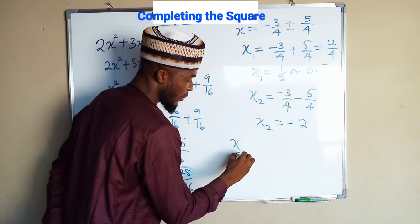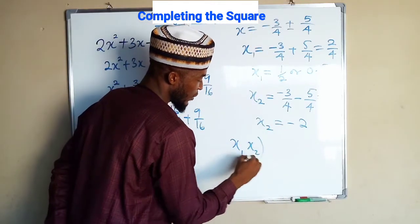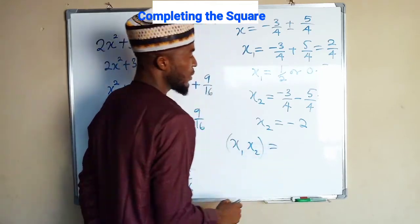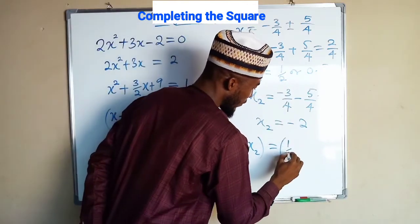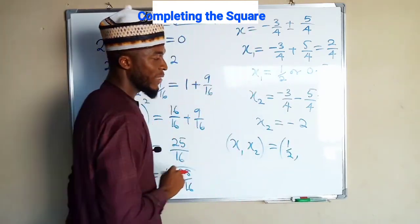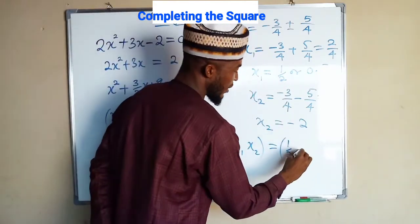Hence the two solutions we have, x1 and x2 are equal to: the first one is either half or 0.5, so we have one-half, and the second one is negative 2.